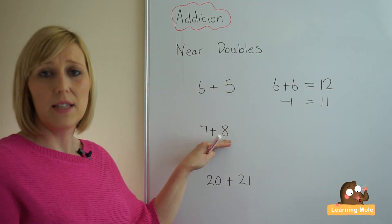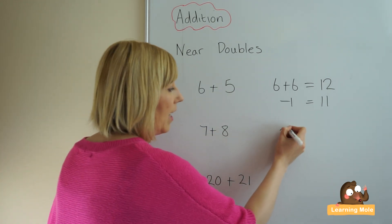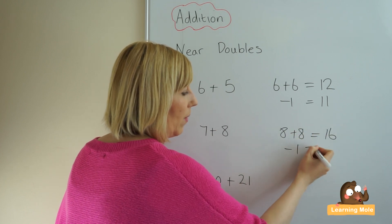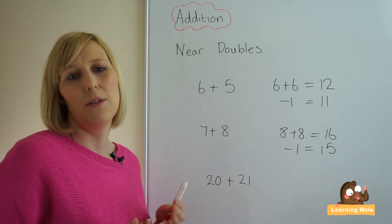Again, identifying that these two numbers are very near to doubles. We can say 8 plus 8 is 16, take away one is 15, which is just slightly more manageable for your child.